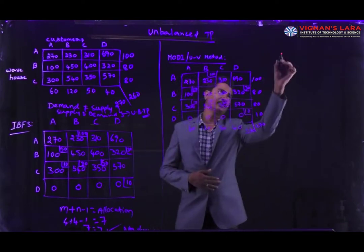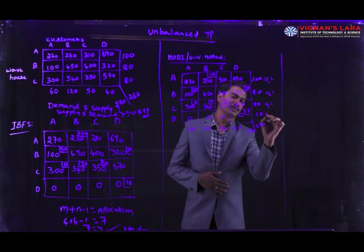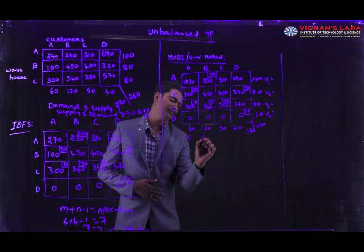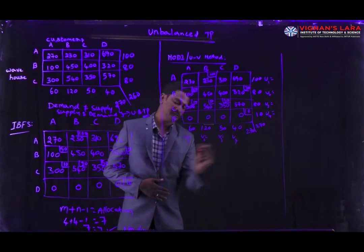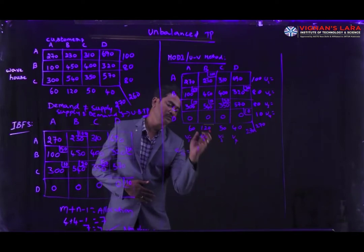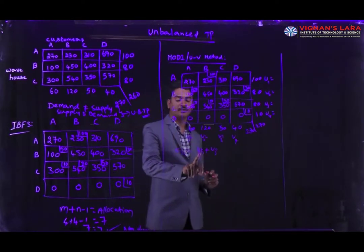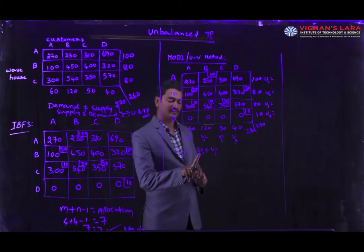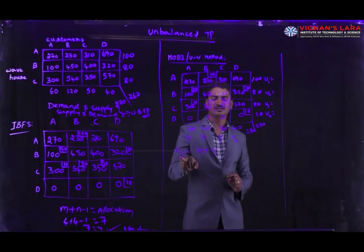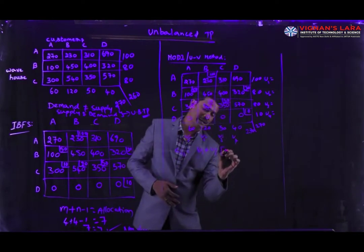Now we are going to calculate the shadow prices for each row and column, denoted as u1, u2, u3, u4 and v1, v2, v3, v4. The formula is: C_ij equals u_i plus v_j, where u_i is the shadow price of supply and v_j is the shadow price of the demand center. C_ij is the unit cost value — these values are available in the table for allocated cells.